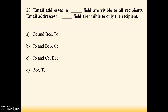Next question: email addresses in which field are visible to all recipients, and in which field visible to only the recipient? This question is very important. Options are A: TO and BCC, B: TO and BCP, C: TO and CC / BCC, D: BCC and TO. Answer is option C — TO and CC are visible to all recipients, BCC is visible only to that recipient.